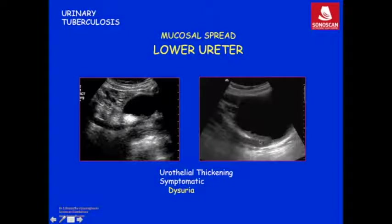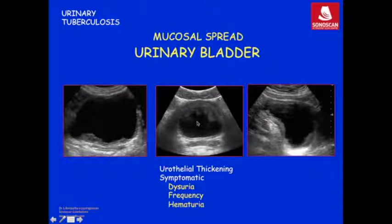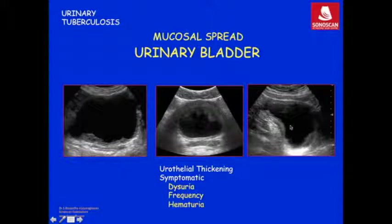At the stage of ureterovesical junction involvement, the patient becomes symptomatic and develops dysuria. The spread of infection to the urinary bladder is seen as focal urothelial thickening anywhere along the bladder wall — in one case showing thickening at the dome, and in another showing marked urothelial thickening involving most of the urinary bladder.